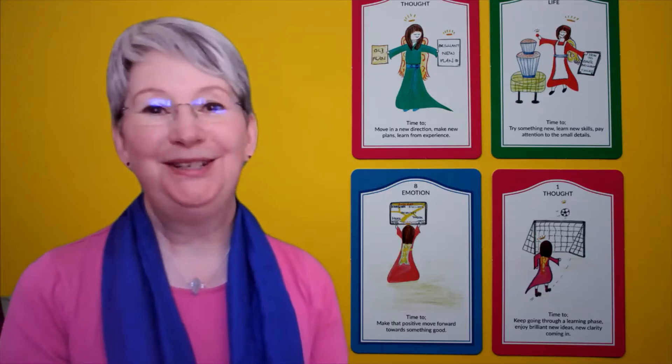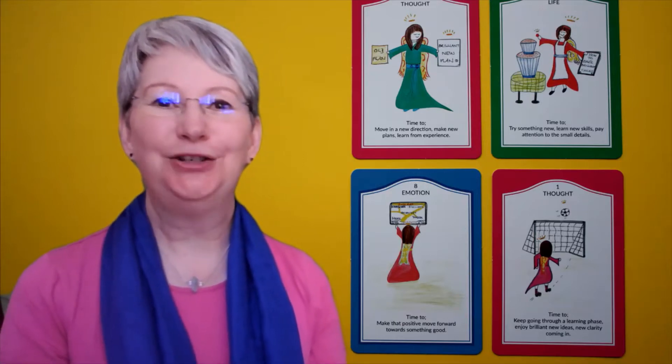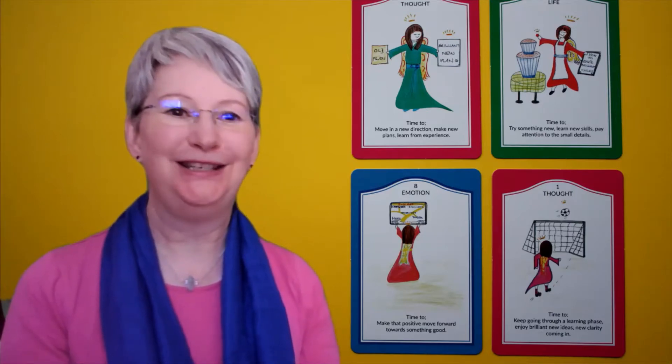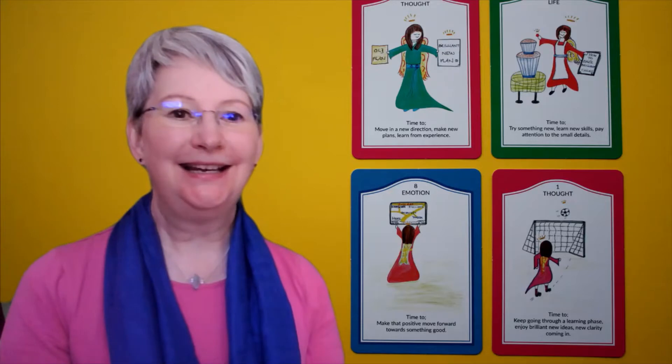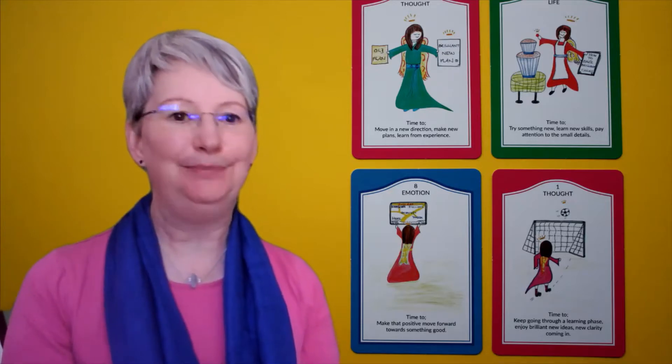Hi everybody, welcome to Anne Ellis Angel's YouTube channel and here is your angel oracle card reading for the coming week, the 26th of April 2021. And this card reading is for the sun sign, the zodiac sign of Libra.